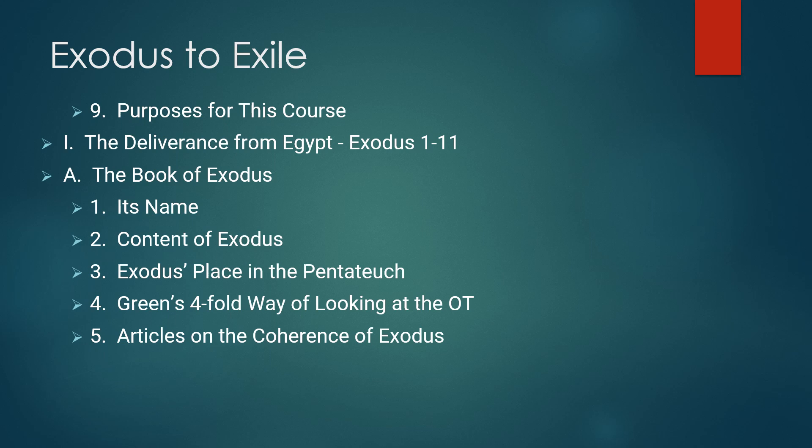Before going on, I want to call your attention to two articles by Ari Leder in the bibliography under 1A: 'Reading Exodus to Learn and Learning to Read Exodus' and 'The Coherence of Exodus: Narrative Unity and Meaning,' published in 1999 and 2001 in the Calvin Theological Journal. Leder says: 'Adam and Eve were expelled from God's presence in the Garden of Eden for refusal of divine instruction. In Exodus, when the glory cloud fills the newly constructed tabernacle, God dwells in the midst of the descendants of Adam and Eve through Abraham and Sarah.'